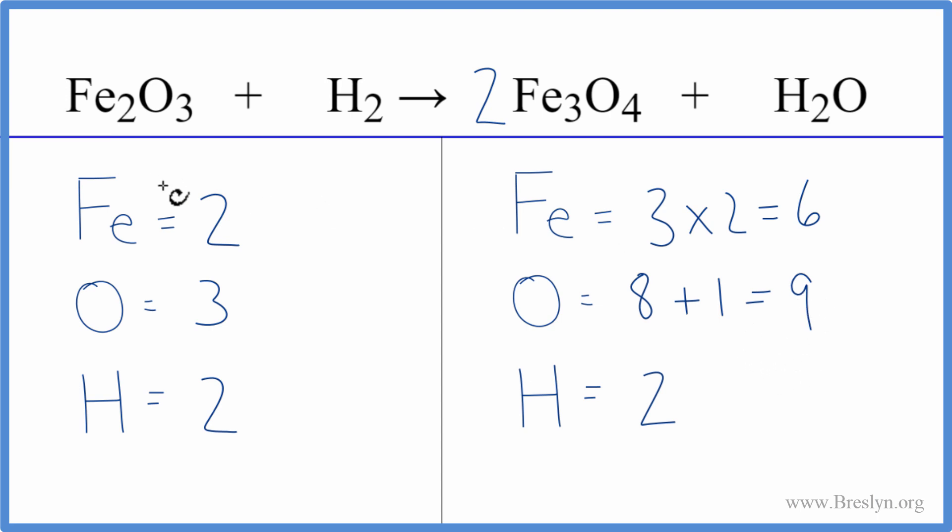But at least now I can fix the irons by putting a three in front of the Fe2O3. Because I have two times three, that gives me six. The irons are balanced.